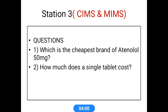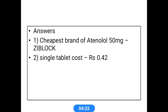CIMS is a very small book that contains all drug references. It mainly gives information about different brands of drugs. We know drugs are available in different brands, and their cost-effectiveness can be evaluated using CIMS. For example, which is the cheapest brand of Atenolol 50 mg, and how much does a single tablet cost? The cheapest brand is C-block, with a single tablet costing less than 50 paise. CIMS gives more drug information about drug brands and cost-effectiveness, making it a good source of drug information.